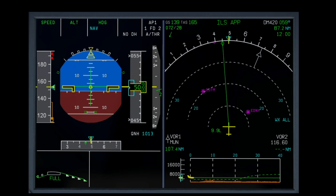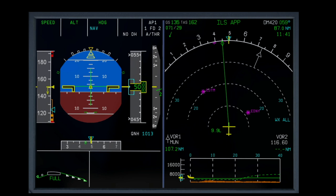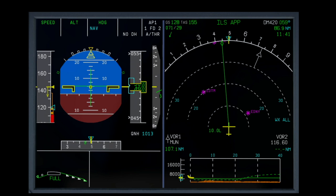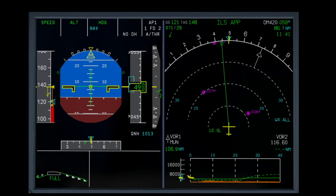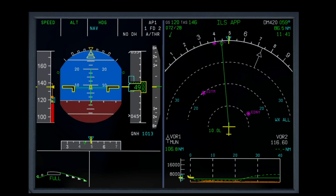What happens if I select the speed below VLS, here 120 knots? Well, the speed initially decreases but will stabilize at VLS.